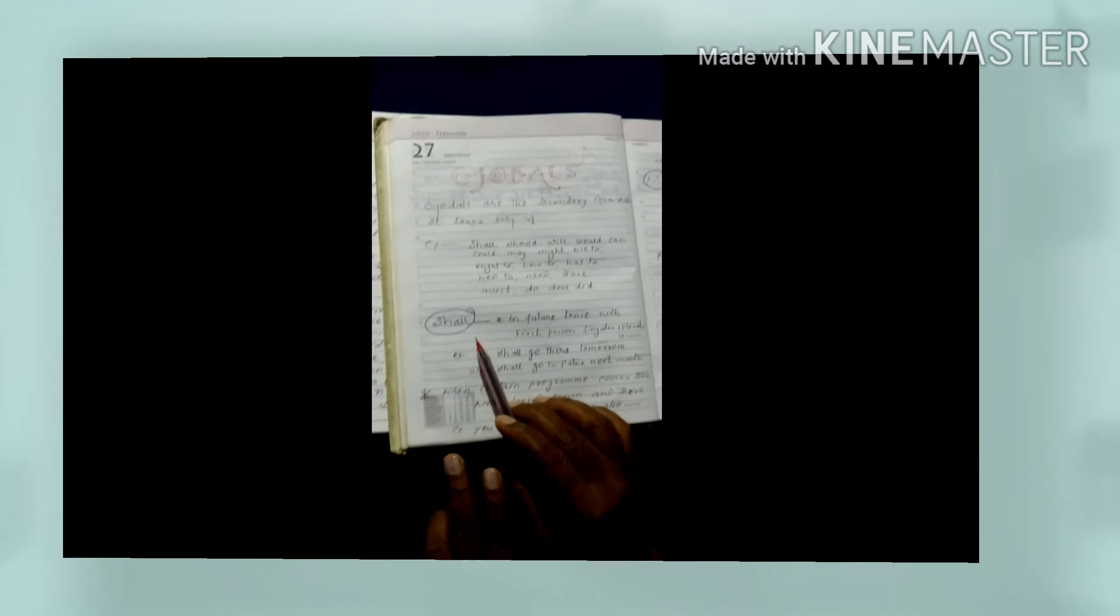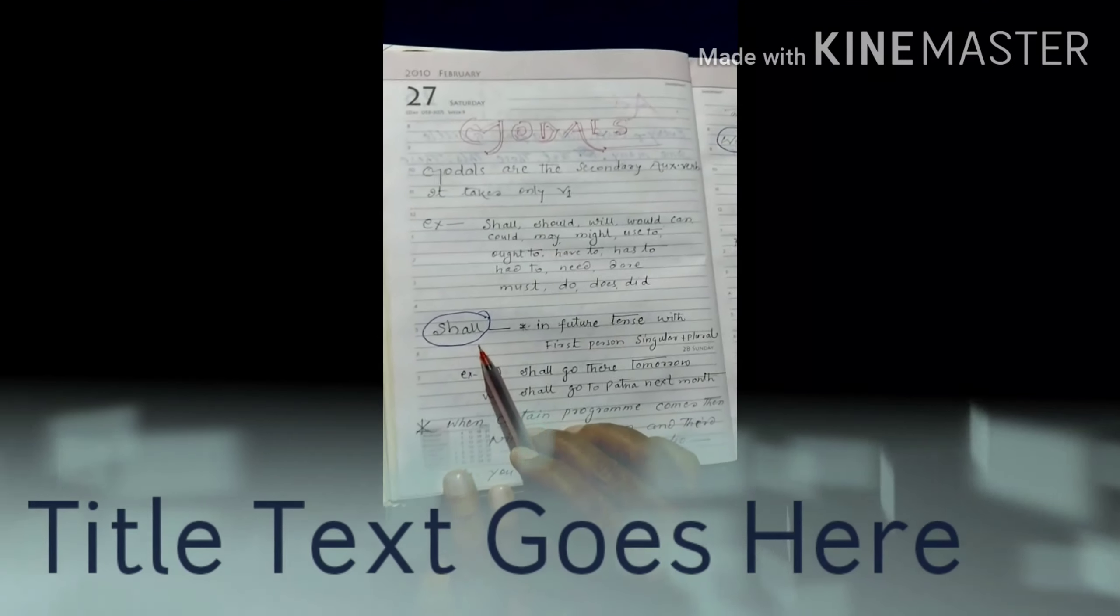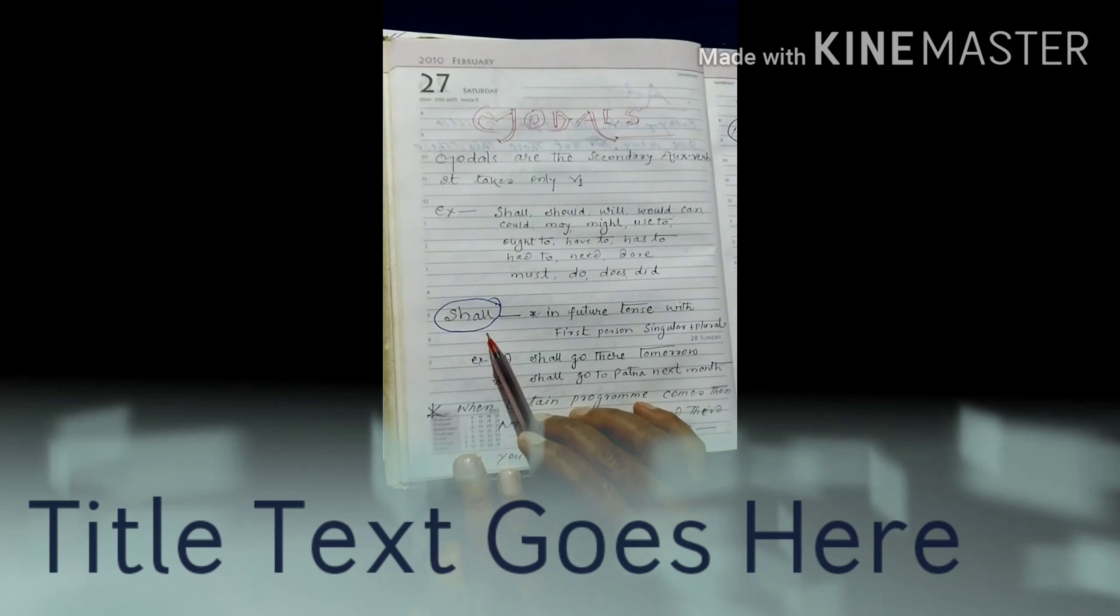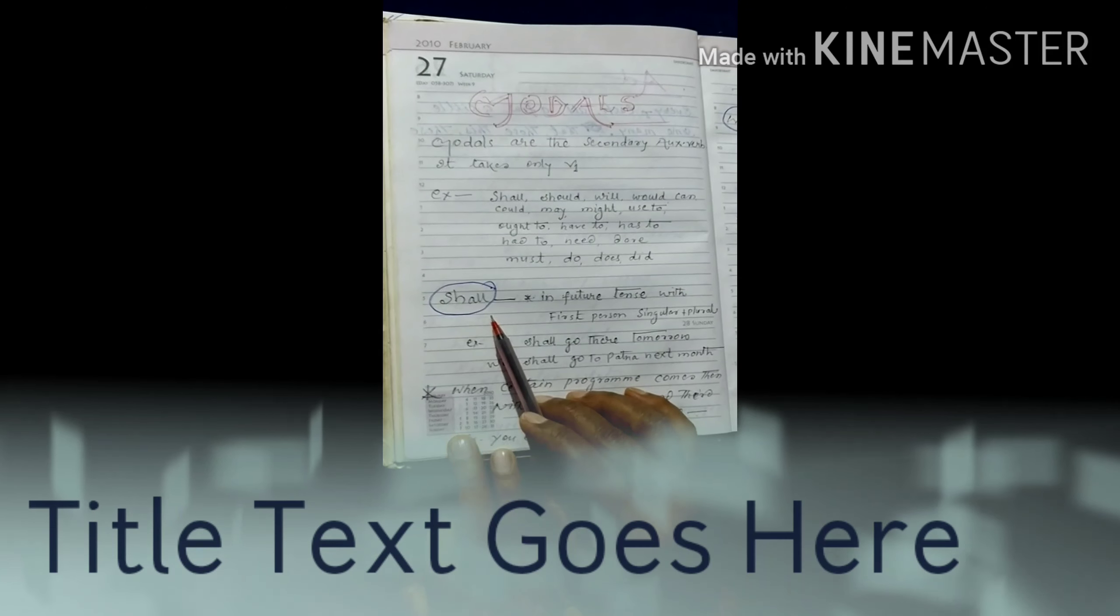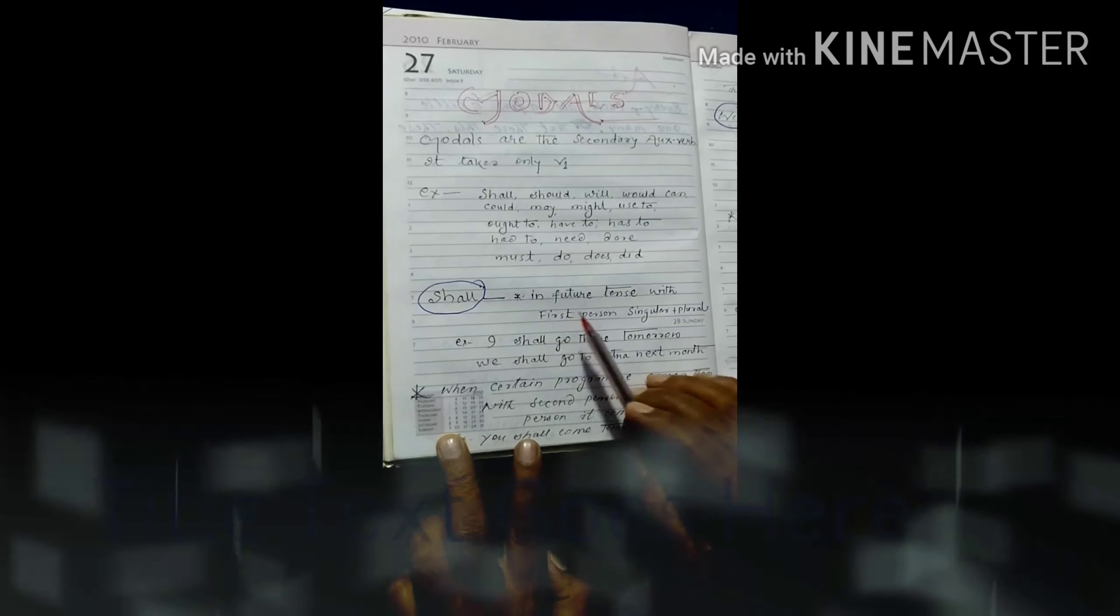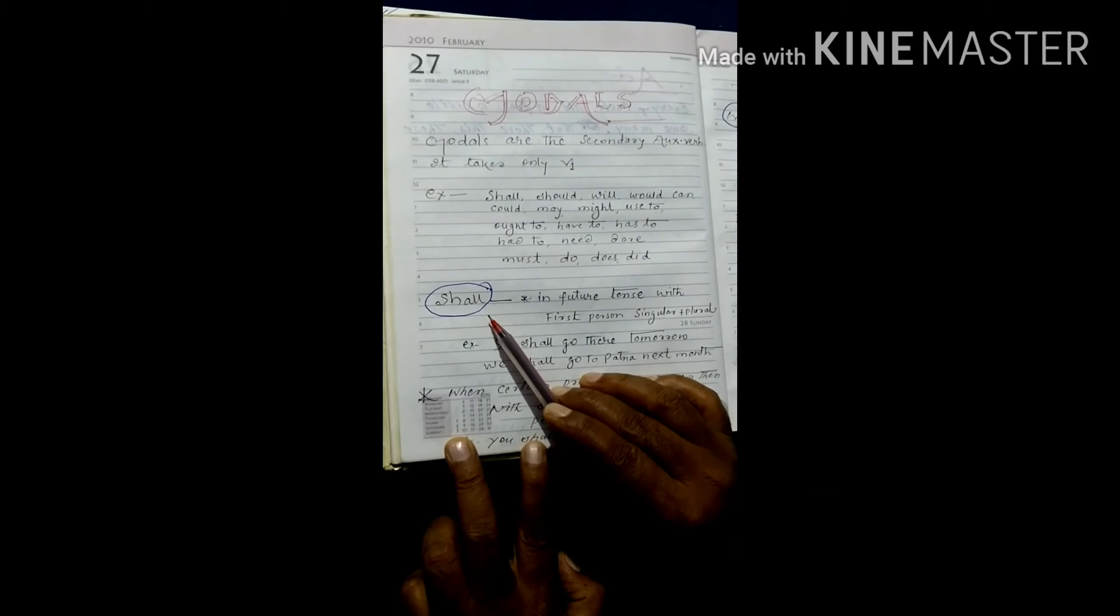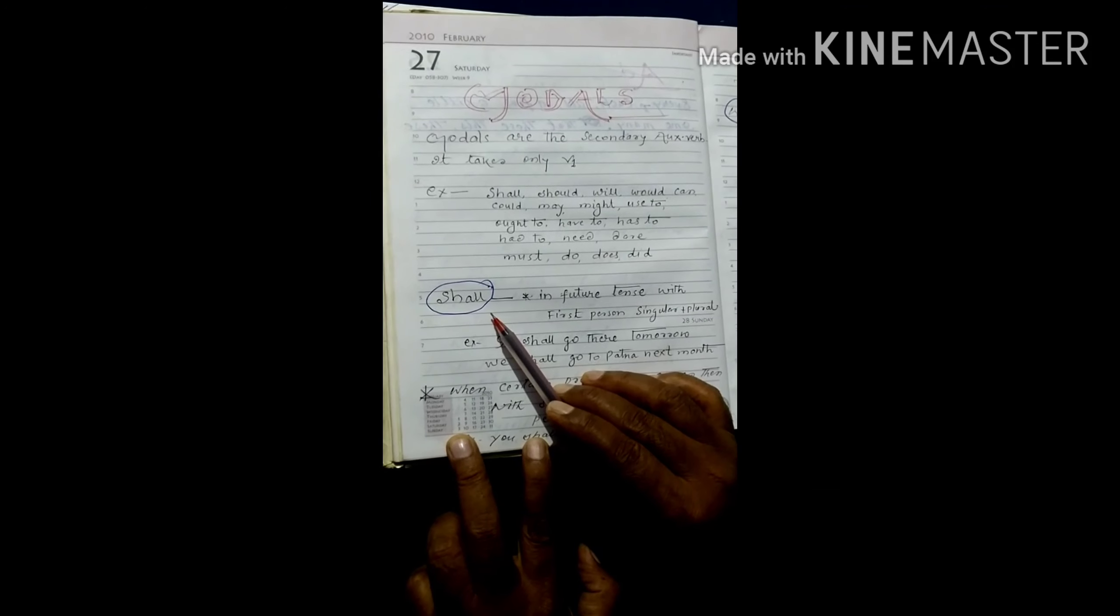You must have studied the previous topic about may, might, can, could, and should. Now I am going to explain the rest part of the model. Firstly, you start here from shall. You will listen its use cautiously, because there may be confusion in understanding you.